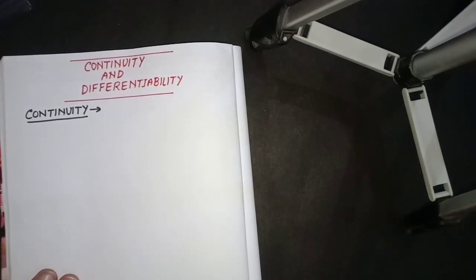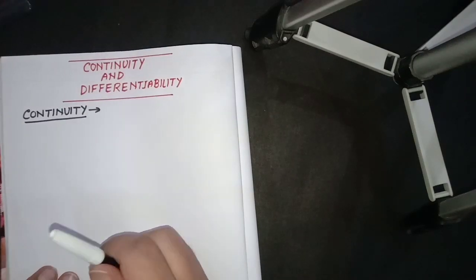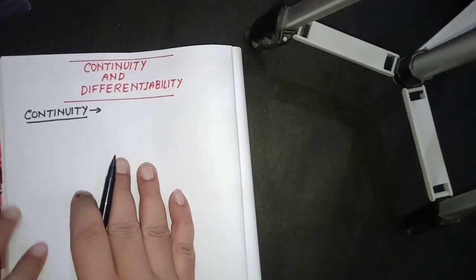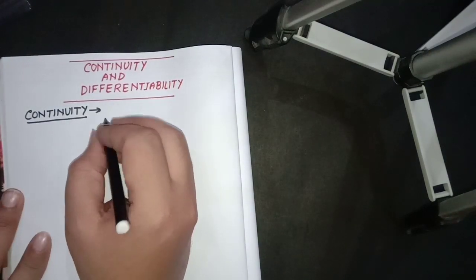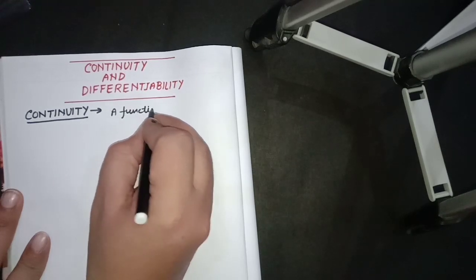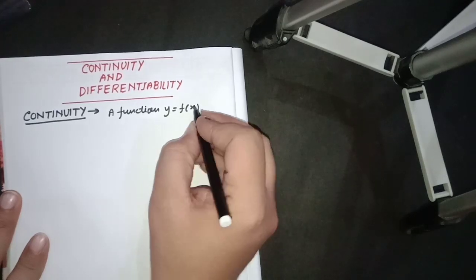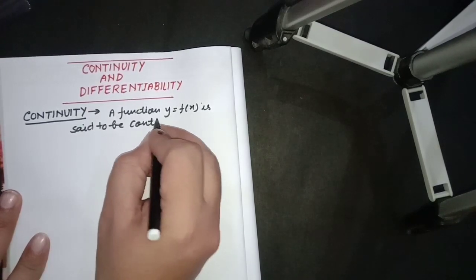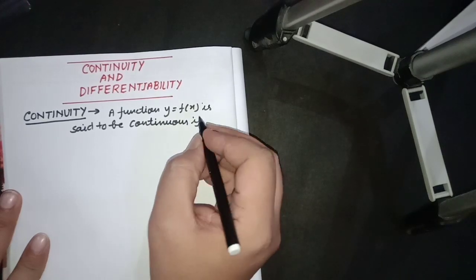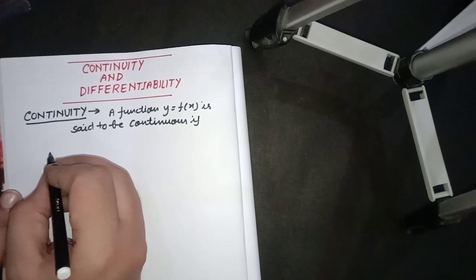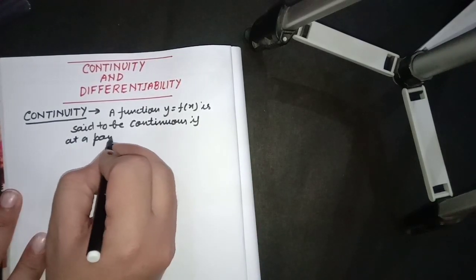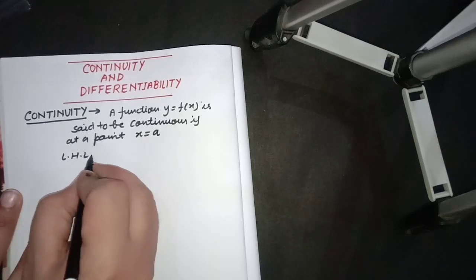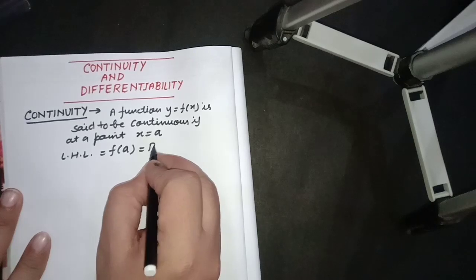We have to discuss the continuity and differentiability of any function. It is a very important topic and long questions are asked in board examinations. First of all, we define what continuity is. A function y = f(x) is said to be continuous at a point x = a if the left hand limit is equal to the functional value at that point, which is also equal to the right hand limit.